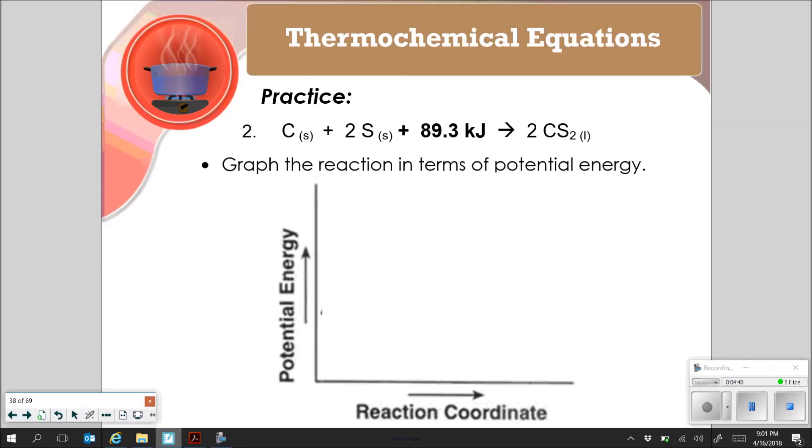So if I'm graphing this one, if this one is endothermic, I'm going to start down here and do something like that. So we've got our carbon, our two sulfurs, and we've got our 2CS2 up here. And the difference between these two should be 89.3 kilojoules.